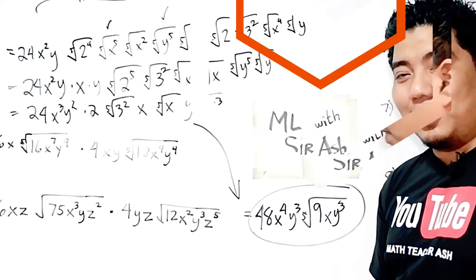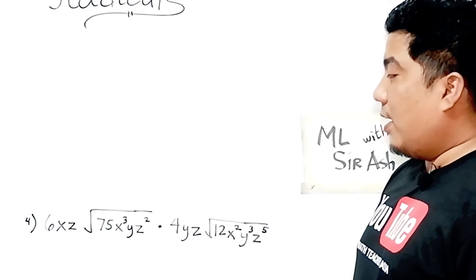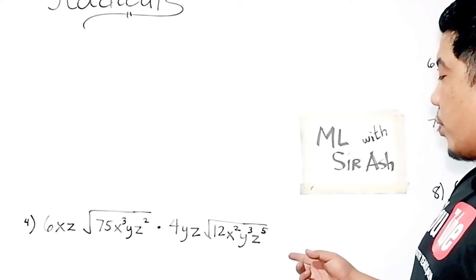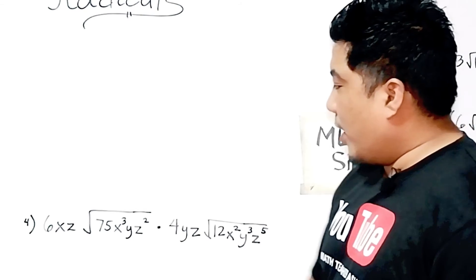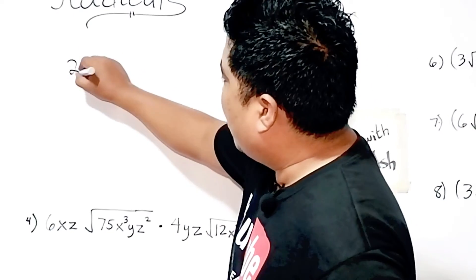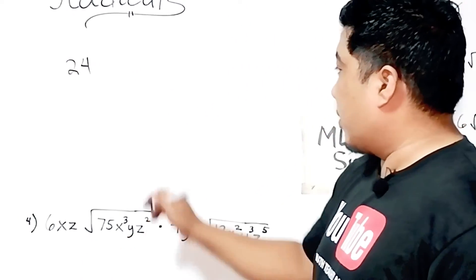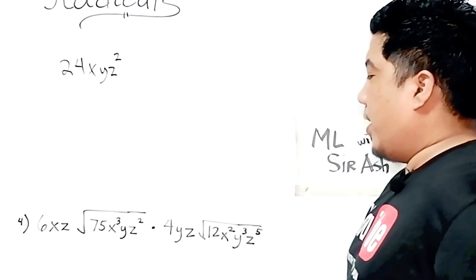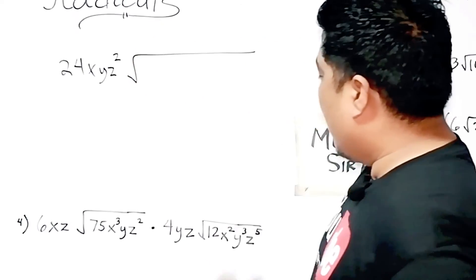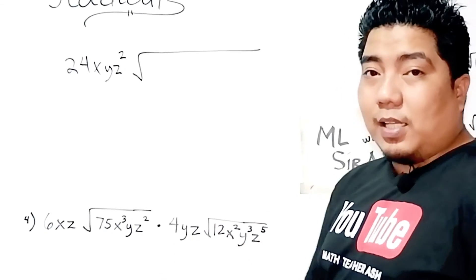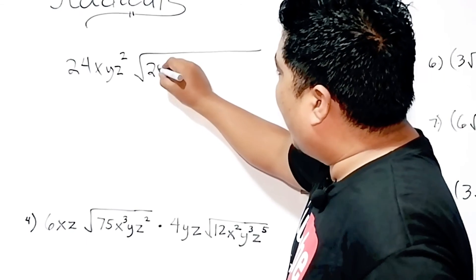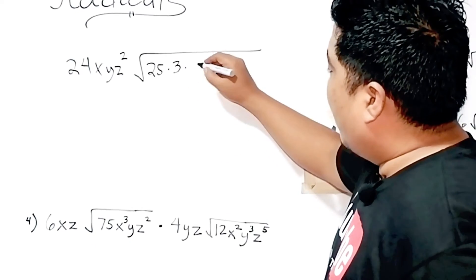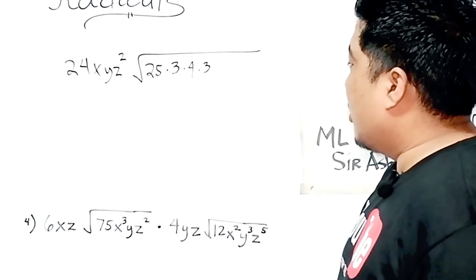Now let us go to our 4th example. We have 6xz times the square root of 75x³yz², multiplied by 4yz times the square root of 12x²y³z⁵. For the coefficients: 6 times 4 is 24, x times x is x, y times... and z times z is z squared — giving 24xyz². For the radical expressions, both are square roots. 75 factors as 25 times 3, and 12 factors as 4 times 3.